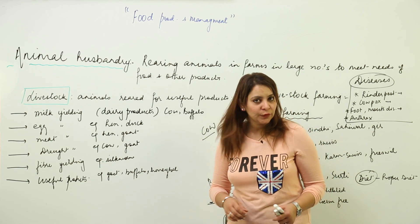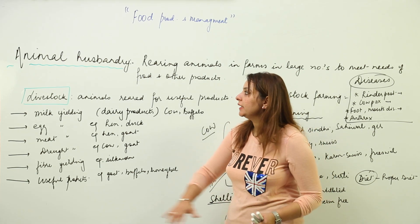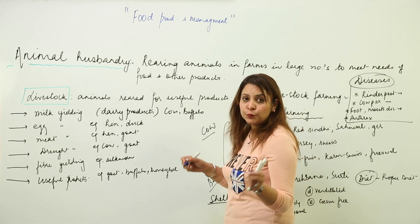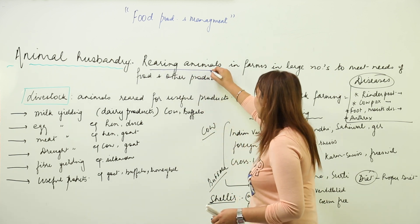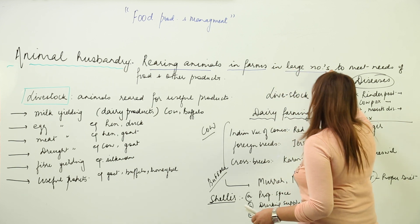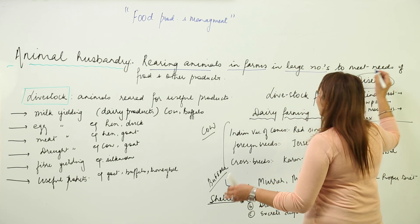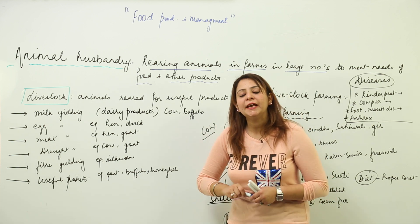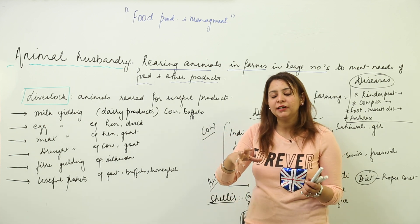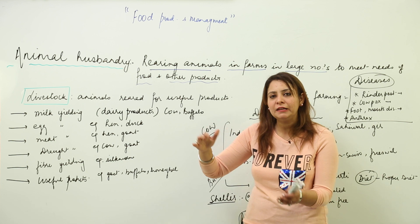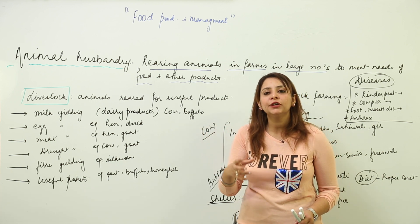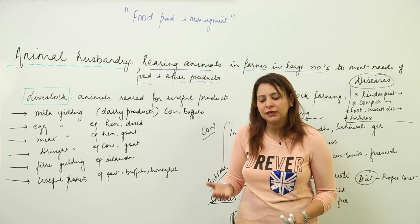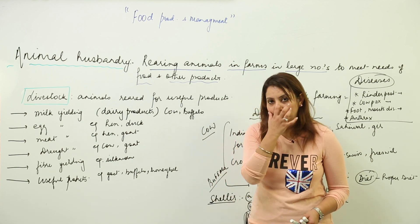We are going to start with the branch that is animal husbandry. Animal husbandry is a branch that deals with the rearing of animals in farms in large numbers to meet food needs and get other products. We rear animals on a large scale to have food, food products, or fulfill other needs — that is called animal husbandry.